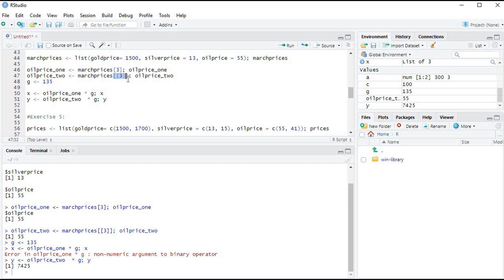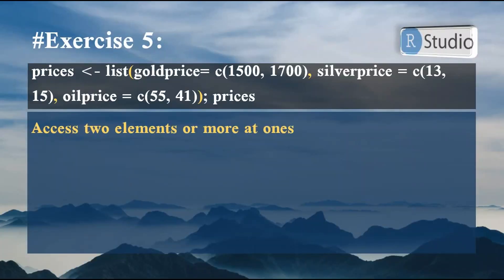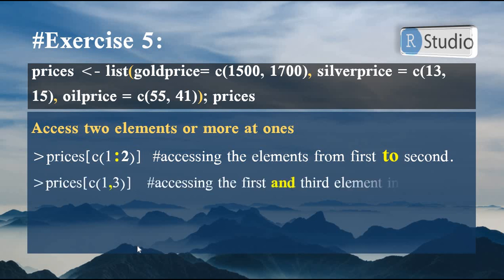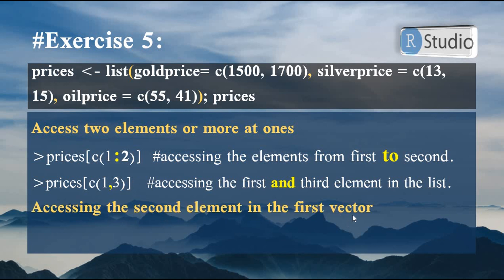To access two consecutive elements at once, use a colon between indices, e.g. list[1:2] for elements 1 to 2. To access non-adjacent elements, use a comma between indices inside single brackets, e.g. list[c(1,3)] for first and third elements. To access a specific element within a nested vector — for example, the second element of the first vector (gold price, which is 1700) — use double double-brackets: list[[1]][[2]].